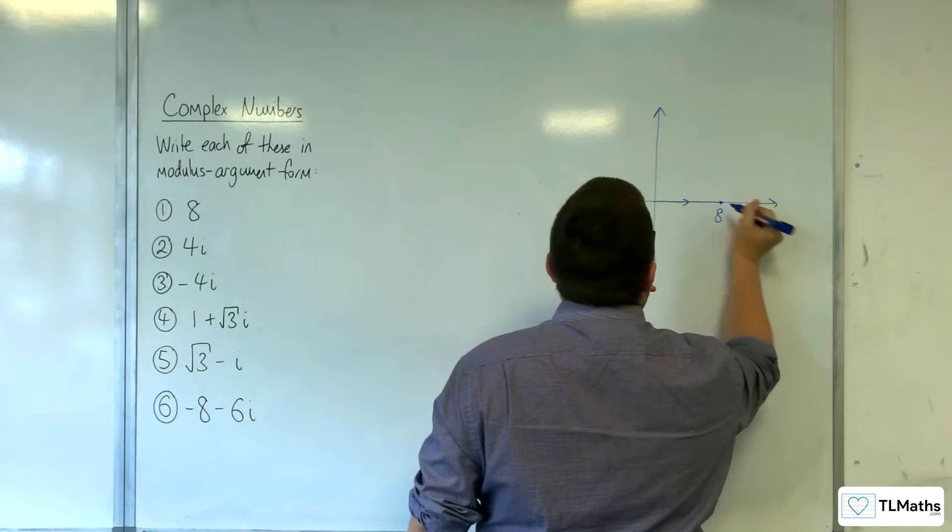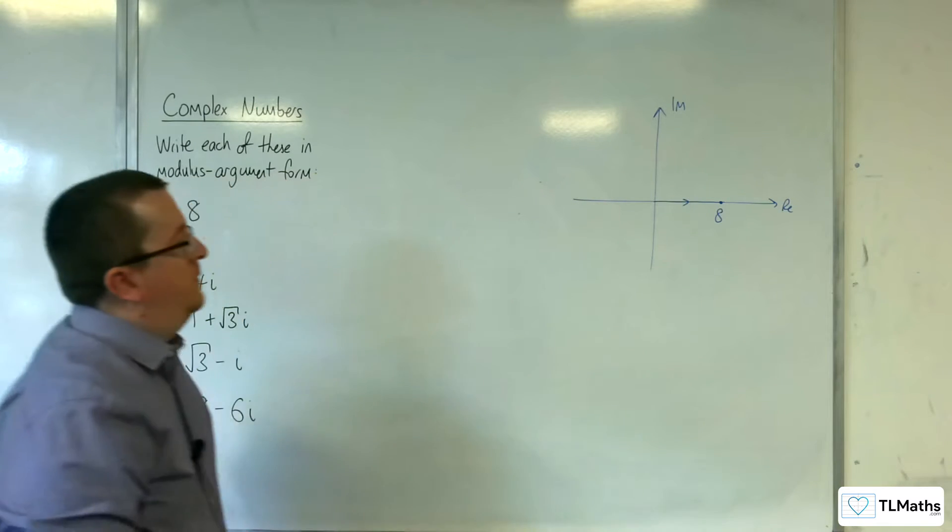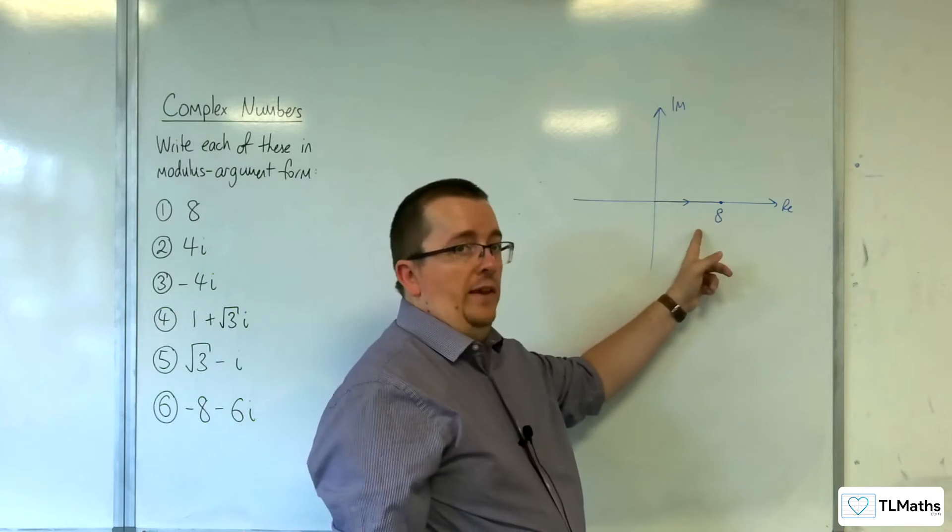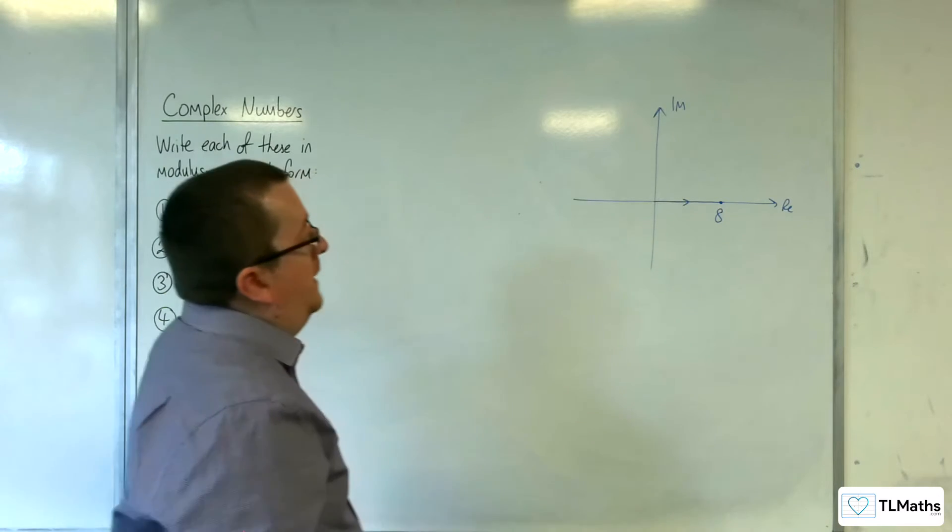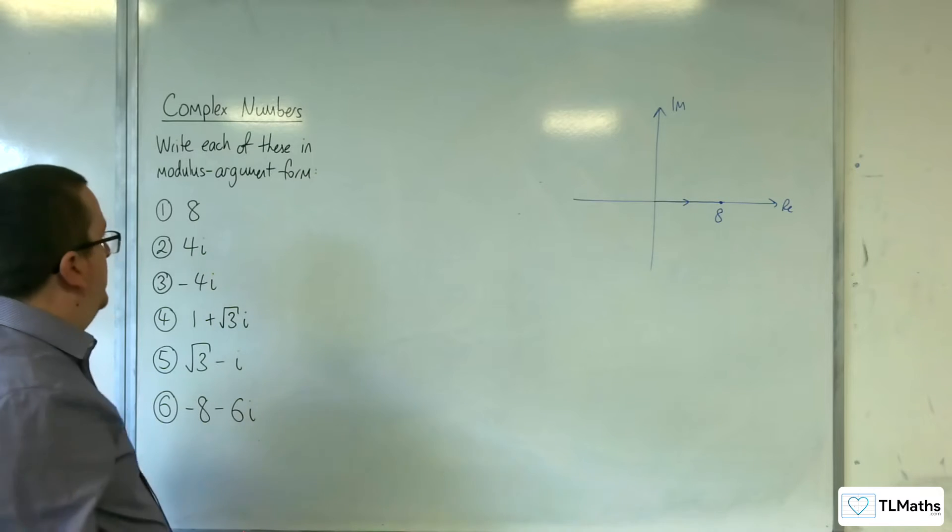There we are, 0 to 8, so that's the real axis and imaginary axis. Clearly the modulus of this is just 8, and the angle that it's making with the real axis is 0, so the argument is 0.